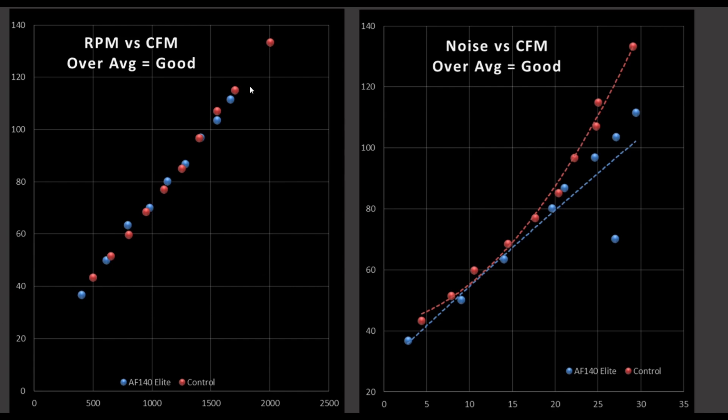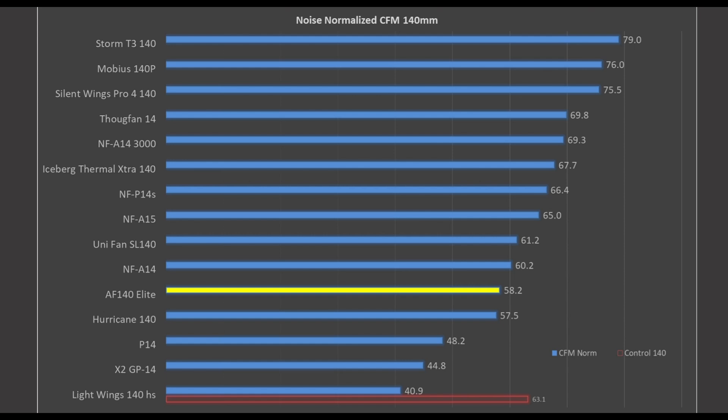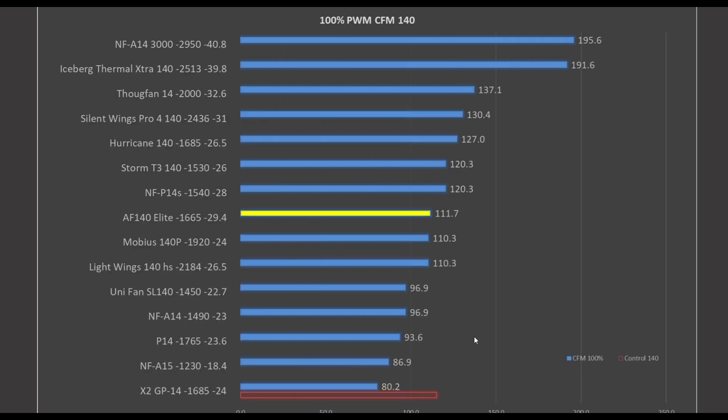No real shocker there, I guess. And, as for the noise value, well, we do once again see the AF-140 Elite being noisier than my control fan. But, how does it compare against other fans? And, well, the AF-140 is sitting below my control fan. But, it's not the worst, but it is at the bottom of the pack. How about at 100%? Well, at 100%, we are sitting smack dab in the middle. So, it's okay, but in terms of its noise, it's on the noisy side.